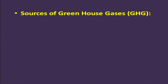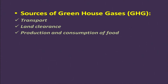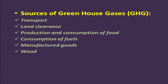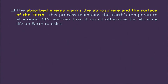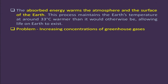The main sources of greenhouse gases include transportation, land clearance, production and consumption of food, consumption of fuel, manufactured goods, roads, buildings, and services. The absorbed energy warms the atmosphere and the surface of the earth. This process maintains the earth's temperature at around 33 degrees centigrade, which is important for the existence of life on earth.